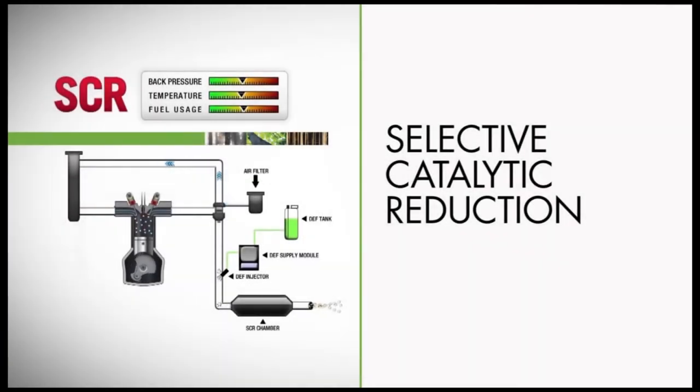The Tigercat FPT engine series uses Selective Catalytic Reduction, or SCR. In an SCR system, the engine is tuned for maximum fuel combustion, maximum power, and maximum efficiency. This reduces PM emissions and fuel consumption, since soot is simply unburned fuel.